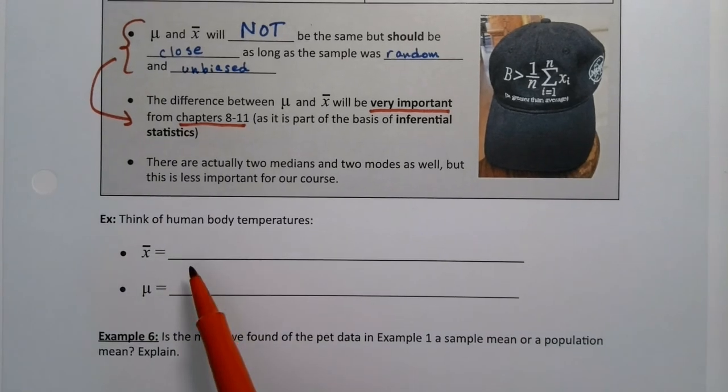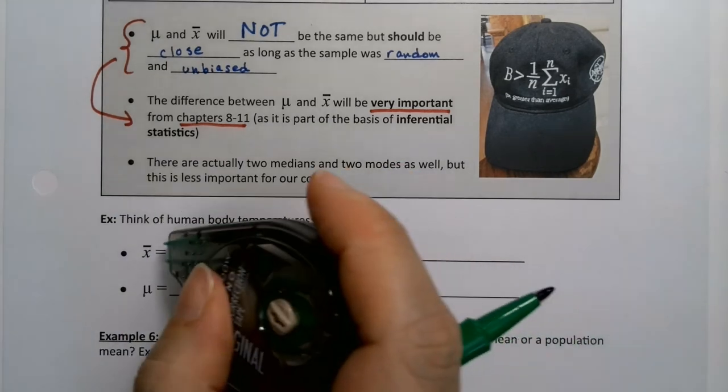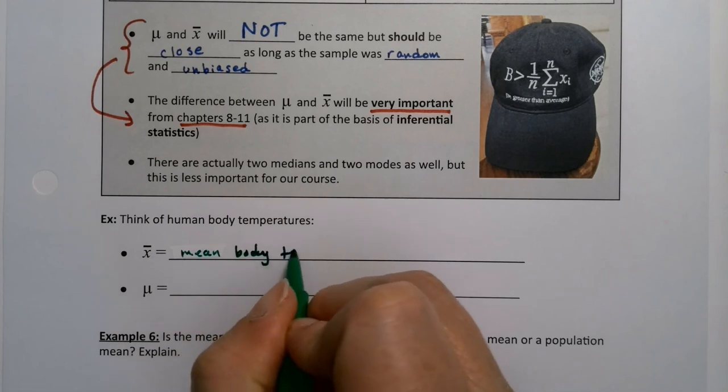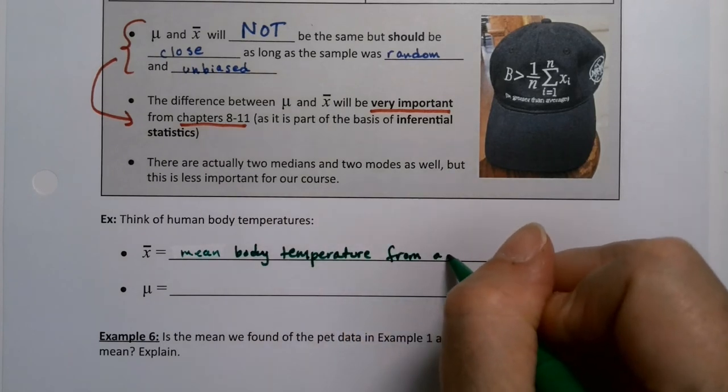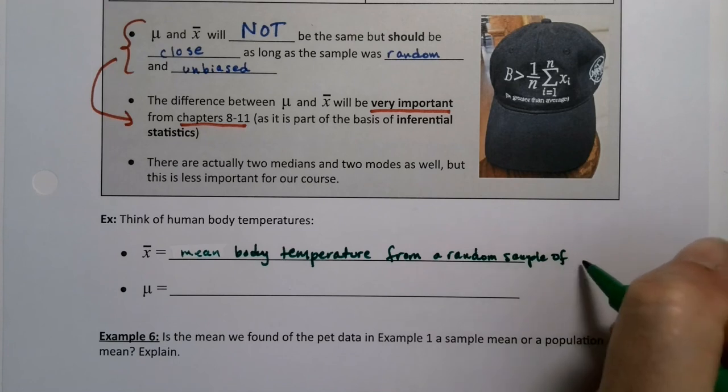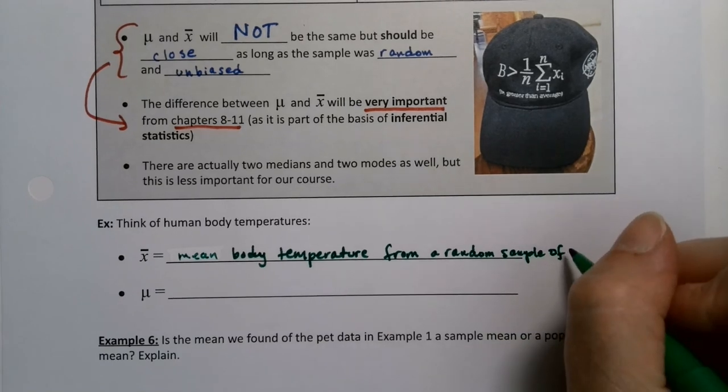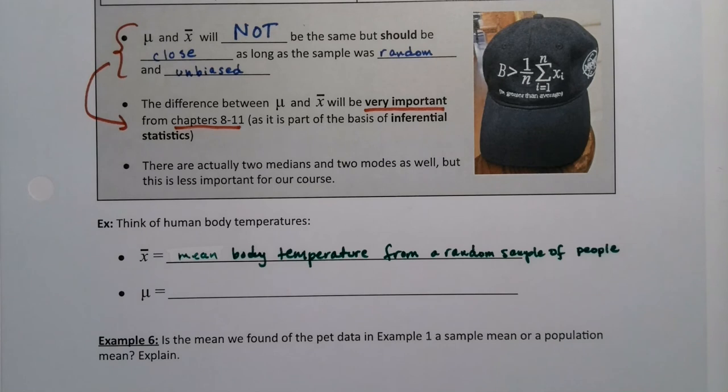Now, if that's a little confusing, just think of human body temperatures for a second. So the x bar would be the mean of a sample of people, a random sample. So it'd be the mean body temp from a sample of people. A nice random sample would be great. You can imagine you maybe don't want to get everybody to be the same gender or everybody to be the same ethnicity. You want a wide variety of ages and genders and ethnicities and everything. You want it to be all mixed in there.